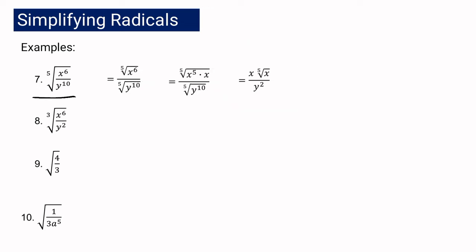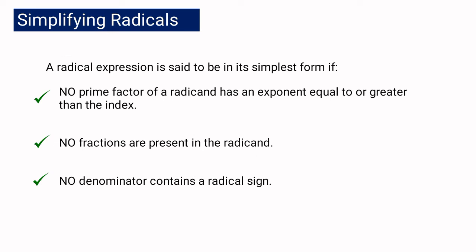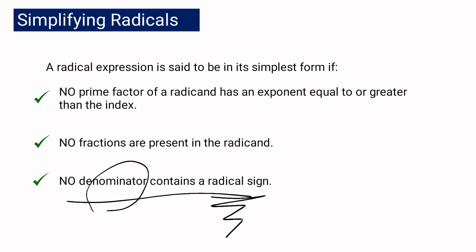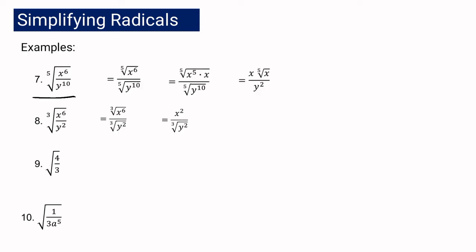For our next example, we have the cube root of x to the 6th over y squared. Applying law of radicals number 3, we write it as the cube root of x to the 6th over the cube root of y squared. Dividing 6 by 3 gives x squared in the numerator. The exponent 2 is already less than 3, so we have the cube root of y squared in the denominator. However, according to condition number 3, no denominator should contain a radical sign, and here we have a radical sign in the denominator.